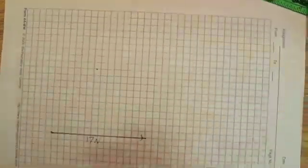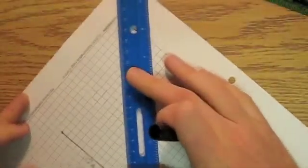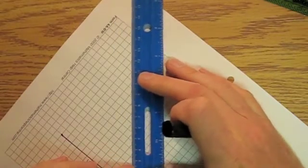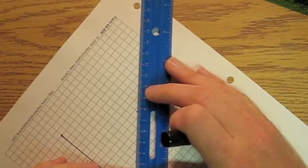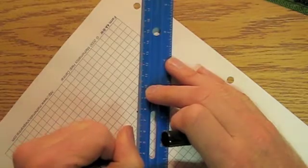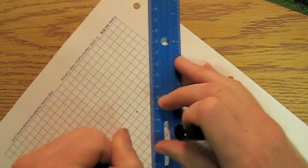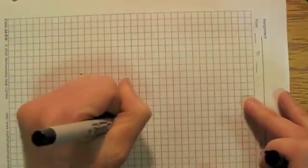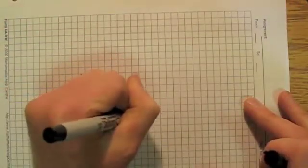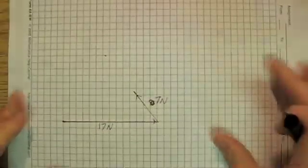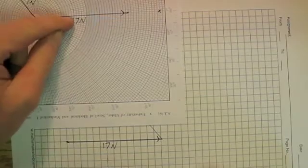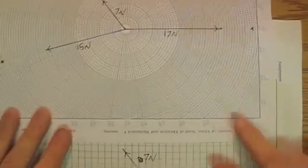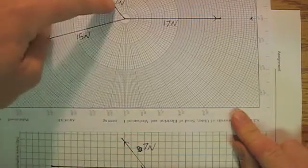And I'm going to go 3.5 centimeters in that direction. So we're getting close, right there. I'll call that 7 newtons. So now, that's my 17 newton vector. That's my 17 newton vector. That's my 7 newton vector. That's my 7 newton vector.